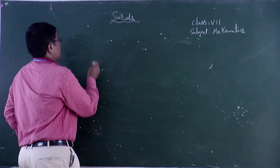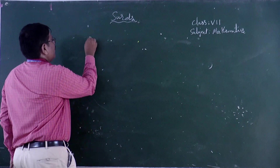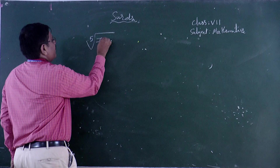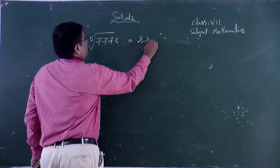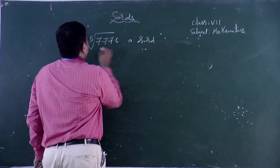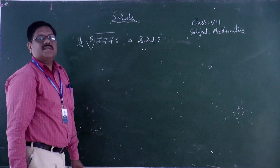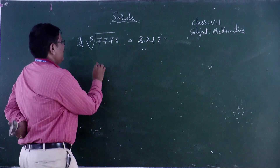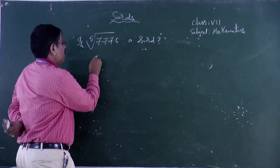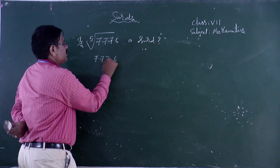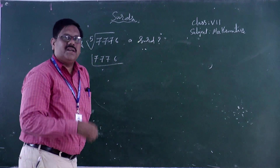Now let us see the next problem. Is fifth root of 7776 a surd or not? To find out, we need to express 7776 as a product of prime factors.